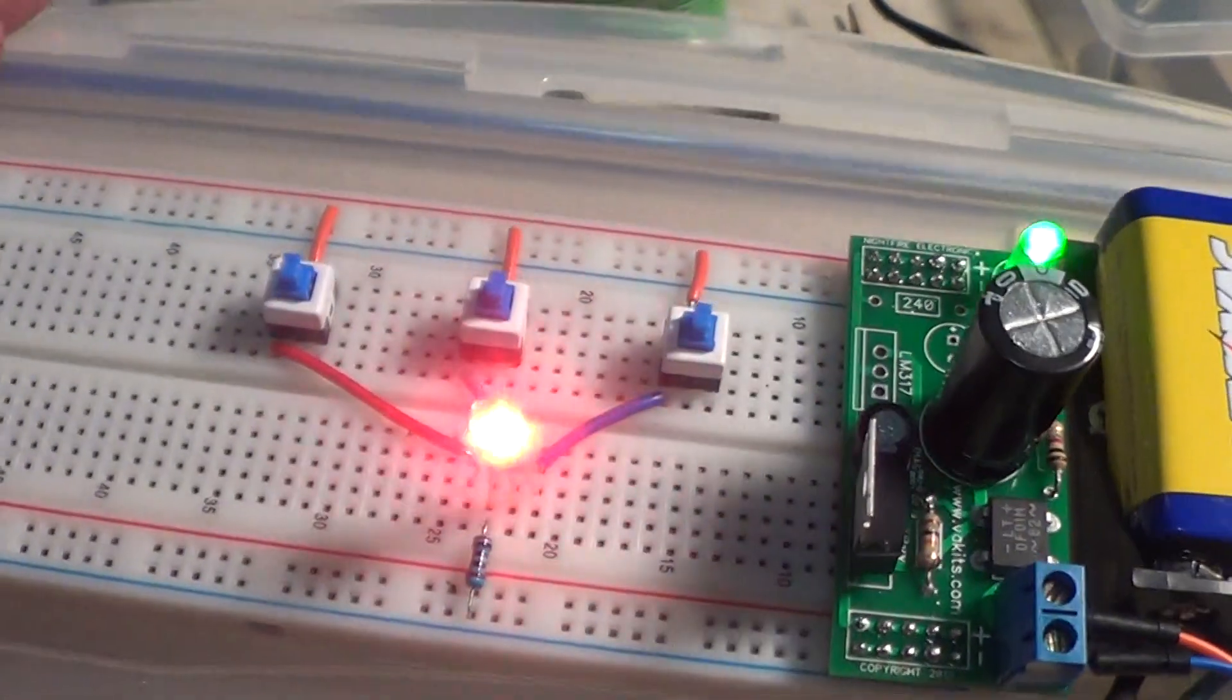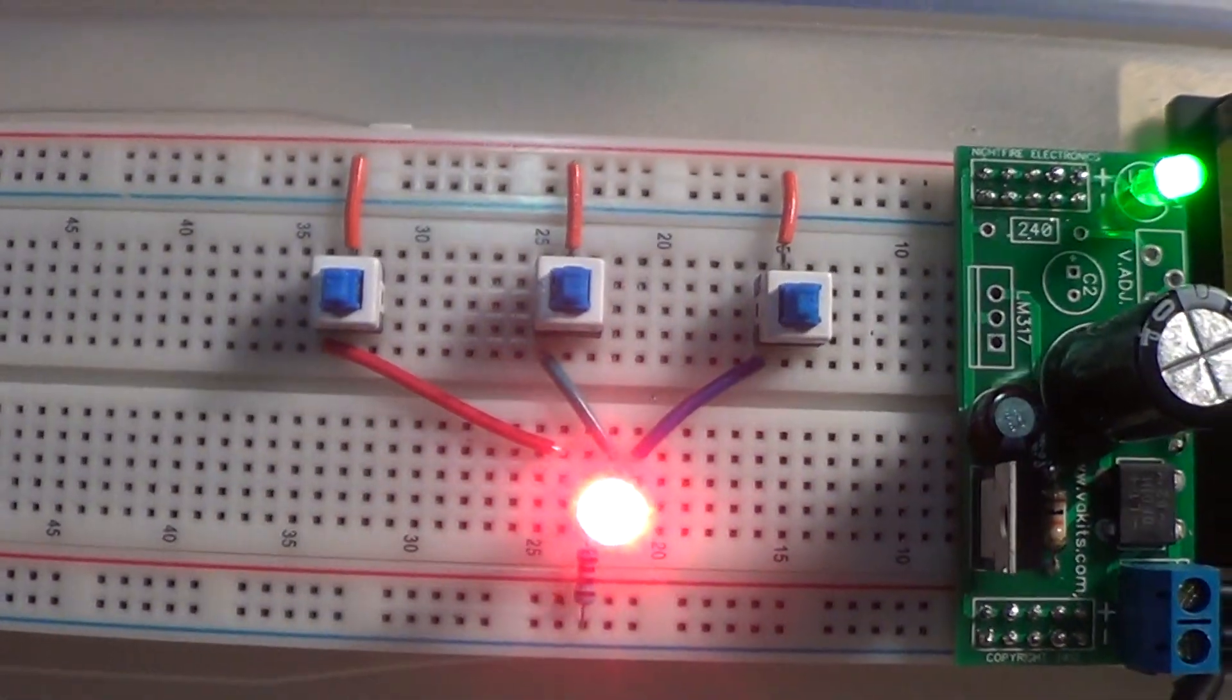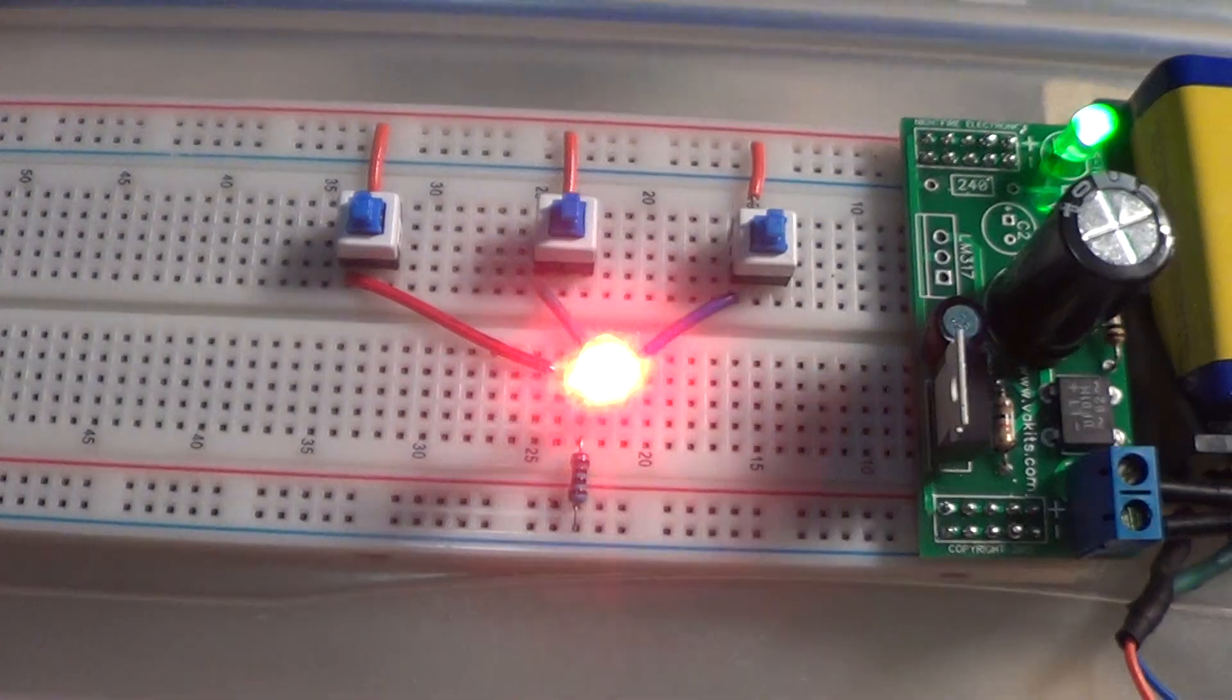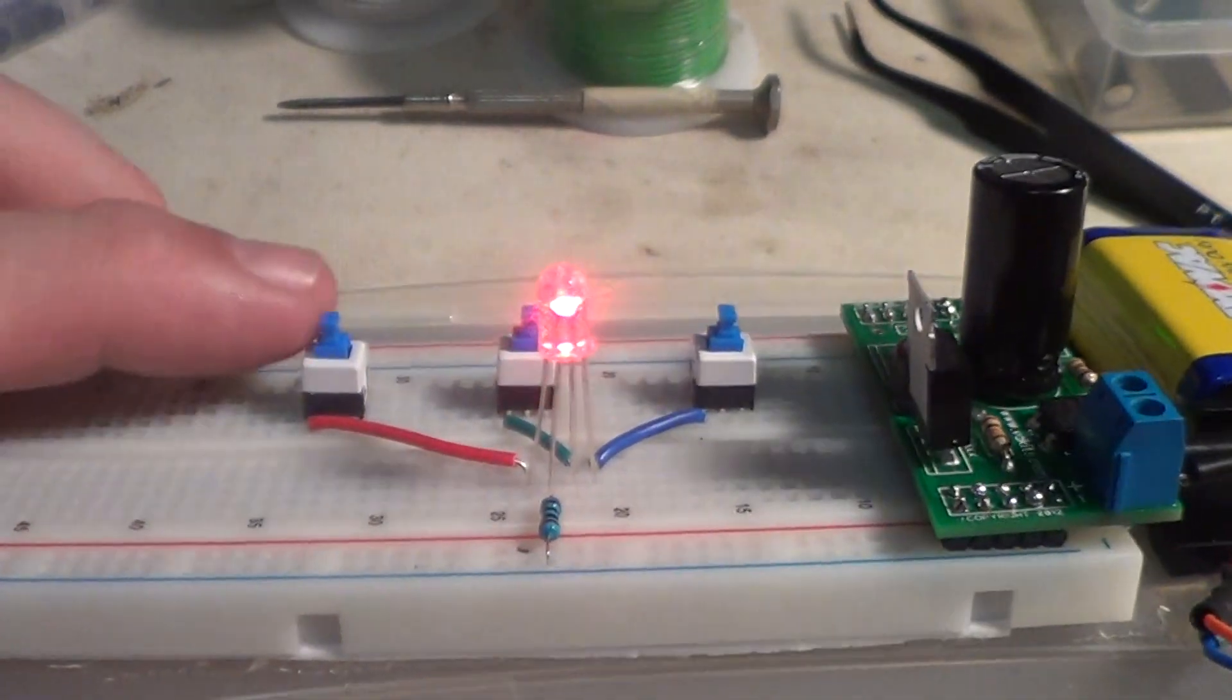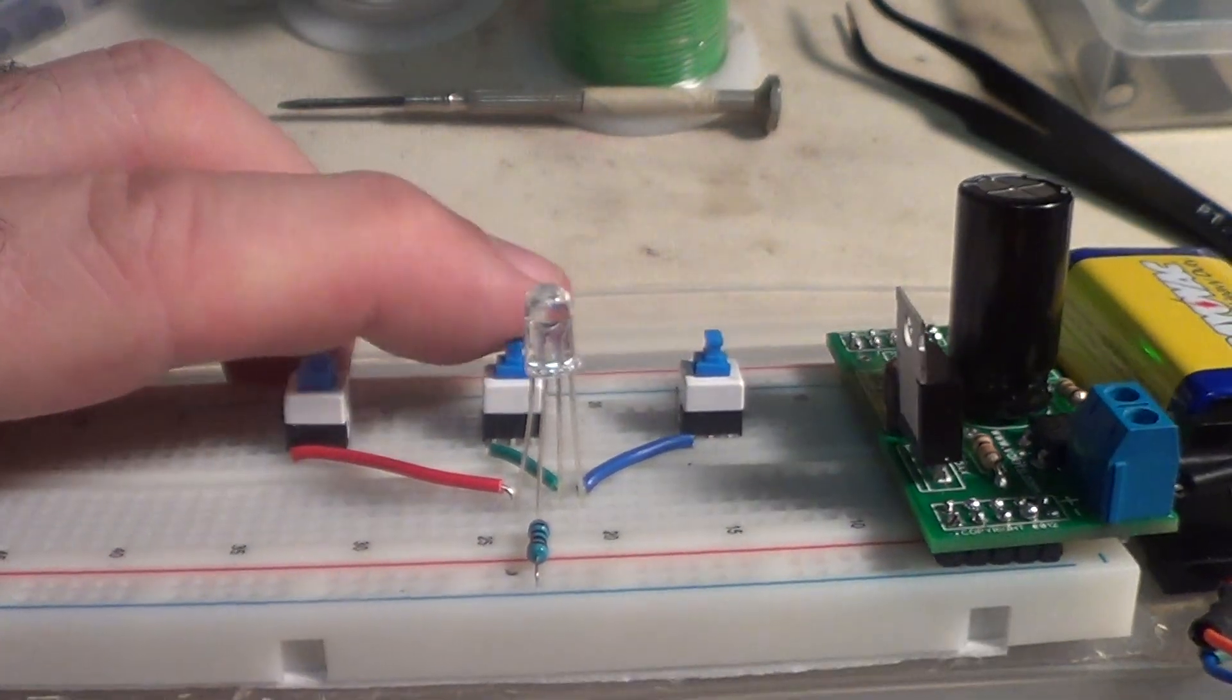So that's a really easy circuit to build on this little breadboard. Three colors out of one LED with three little switches.